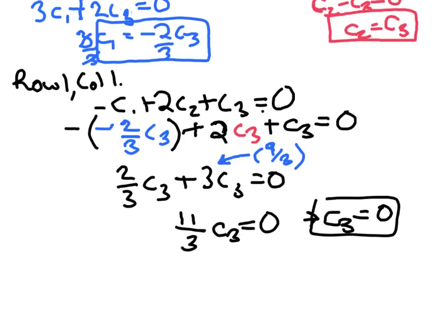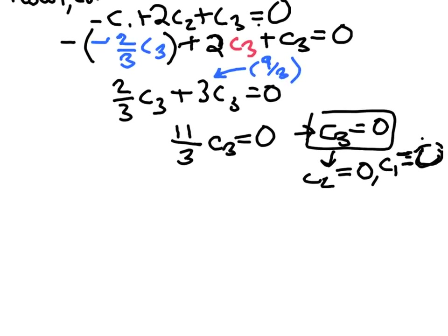Since C3 equals 0, and C2 equals C3, that implies C2 equals 0. Also, C1 equals negative 2/3 times C3, which is negative 2/3 times 0, so C1 equals 0 as well. The only solution to this system of equations is to have all scalars equal to zero — the trivial solution. Since the only solution is the trivial solution, the collection of matrices is linearly independent.